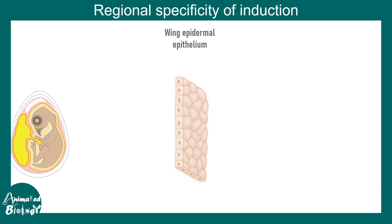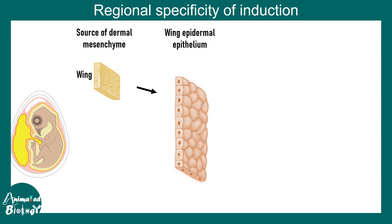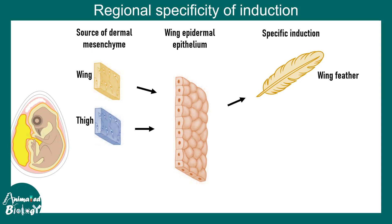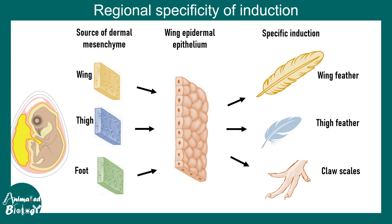There is also regional specificity of fate induction, best demonstrated in chick experiments. In the chick, two skin layers interact: the epidermal epithelium and the dermal mesenchyme. When wing dermal mesenchyme was grafted under wing epidermal epithelium, wing feathers formed. When thigh mesenchyme was used instead, thigh feathers formed. In another experiment, foot mesenchyme produced claw scales instead of feathers. This shows that induction has regional specificity.